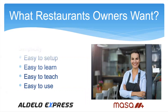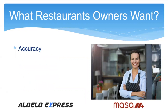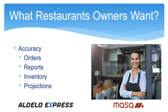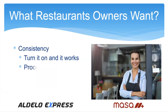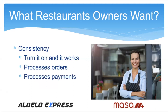With regard to accuracy, they want accuracy in their orders, reports, inventory, and projections. They really want to know they can trust the numbers and don't want to second-guess them. With consistency, they just want it to turn on and work — no worrying about their product. They want processes, orders, and payments all done with no headaches.